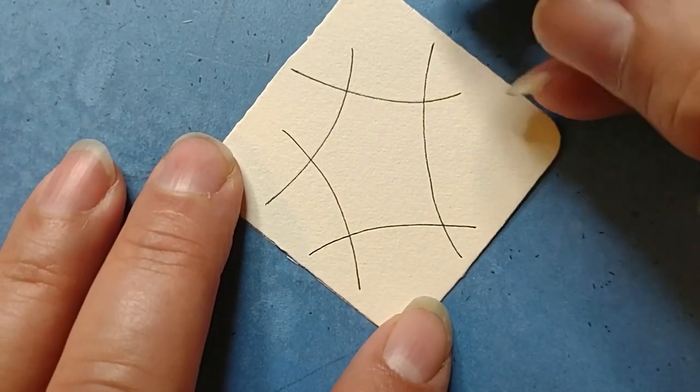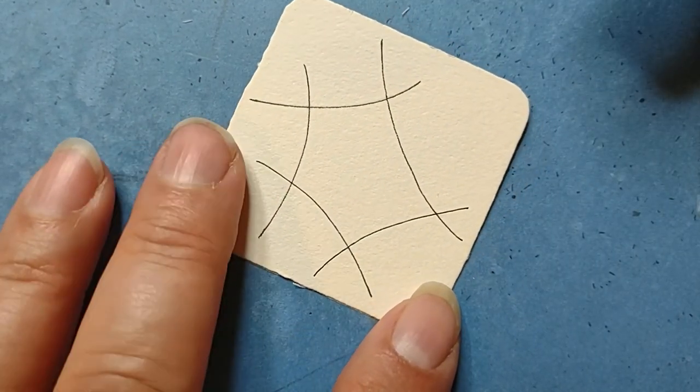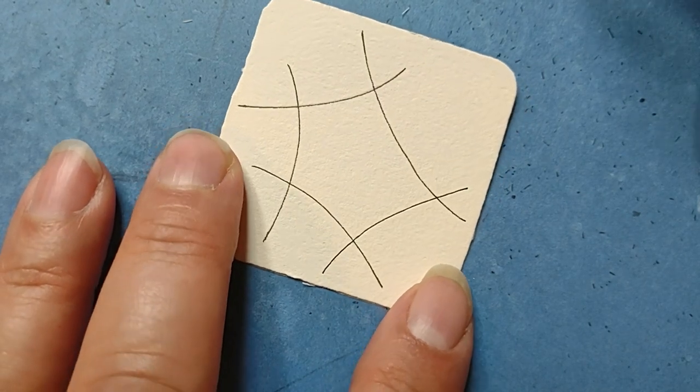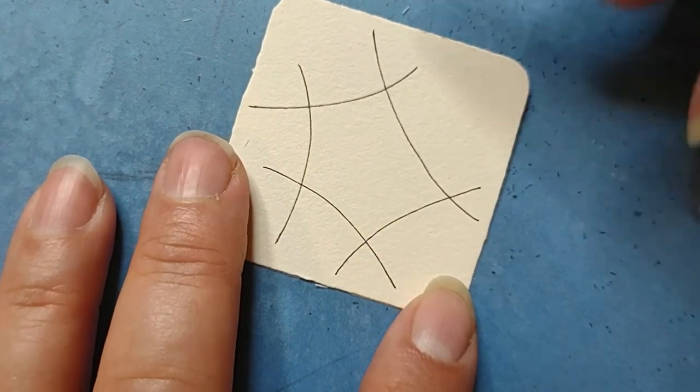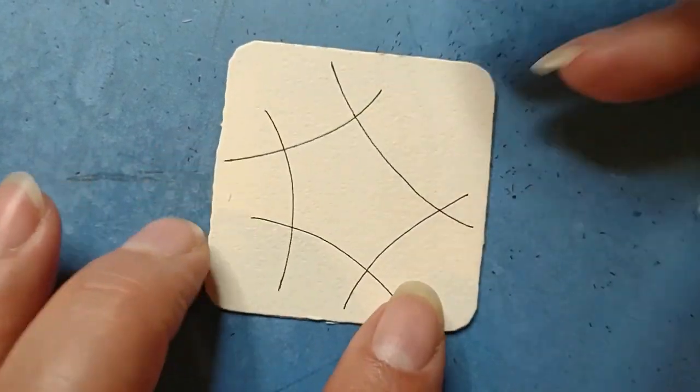Next step, it exemplifies that there's no such thing as a mistake in Zentangle, and also to just follow the steps and don't think about the outcome. You just want to have them all crossing like that.